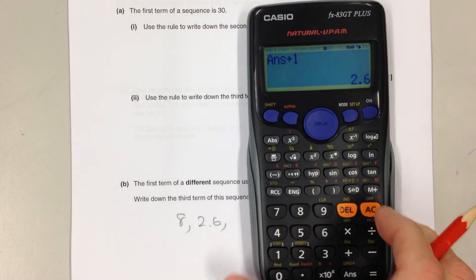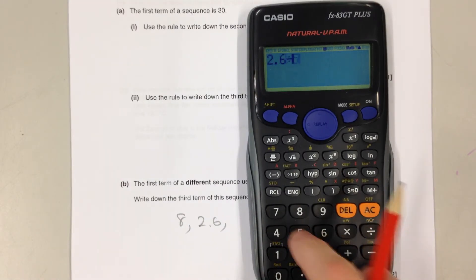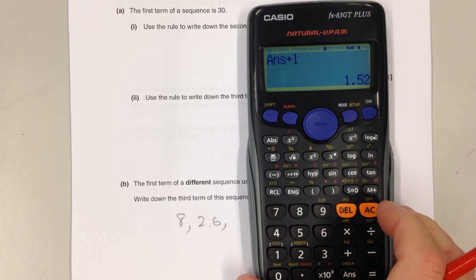To find the third term of the sequence, we need to put the second term in, 2.6 goes in, we divide it by 5, and then we add 1 to get an answer of 1.52.